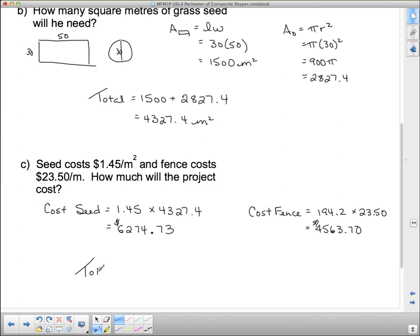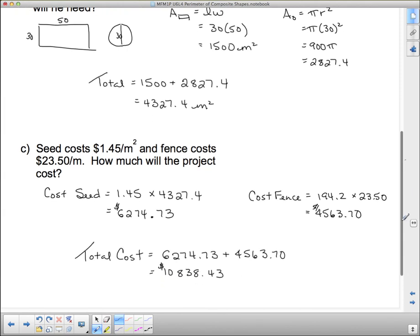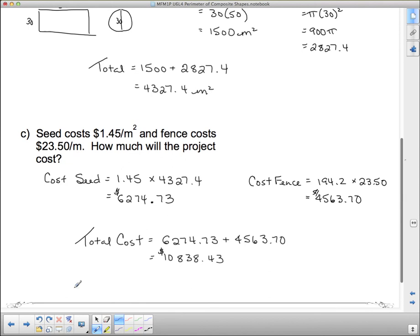So the total cost is those two things added together. So it looks like $10,838.43 is the total cost, and we should have a concluding statement to that effect. Therefore, it will cost $10,838.43 for the project. And that completes this lesson.